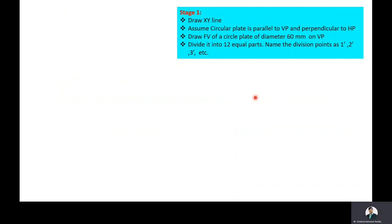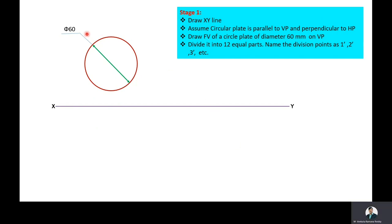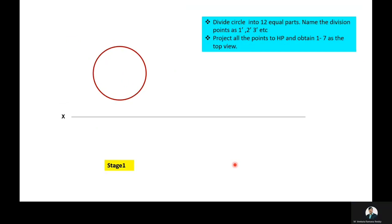As a first step in Stage 1, draw the XY line. As we assumed that the circular plate is parallel to VP and perpendicular to HP, draw the front view of a circular plate of diameter 60 mm on the vertical plane. The front view is a circle of diameter 60 mm. After that, divide the circle into 12 equal parts and name the division points as 1 dash, 2 dash, 3 dash, etc.